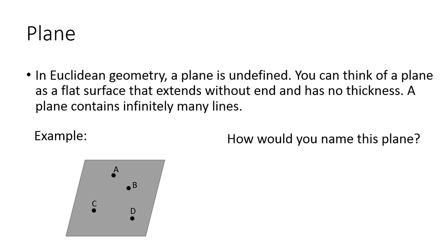All right, a plane. In Euclidean geometry, a plane is undefined. You can think of a plane as a flat surface that extends without end and has no thickness. A plane contains infinitely many lines. So how would you name this plane? So you would pick three points that do not make up a line to name this plane.